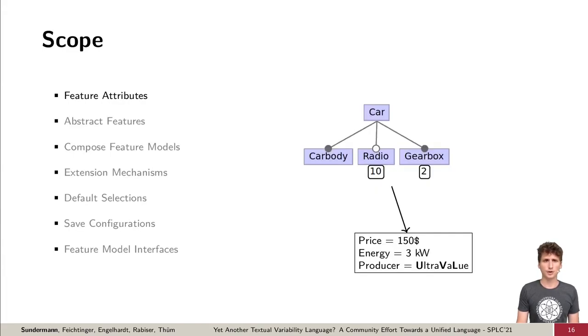So first, which language features should be included in an initial version of UVL? The first concepts we evaluated are feature attributes, which are non-functional properties that can be attached to features, like for example providing a price for each feature. Here, the majority of participants stated that feature attributes should be included, so we included it.